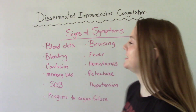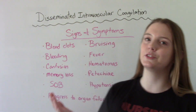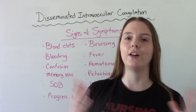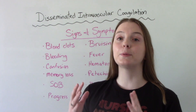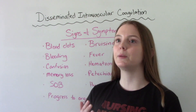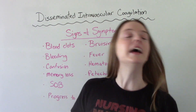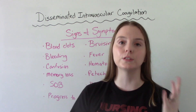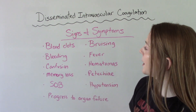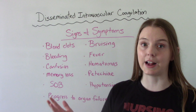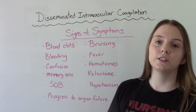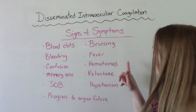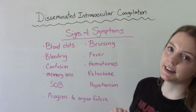Some signs and symptoms of DIC include, of course, blood clots and bleeding — both internal and external, from multiple locations. They could be bleeding from their gums, from their eyes, or from an IV site. They might be confused or have memory loss, have shortness of breath, be easily bruised, have a high fever, and could develop hematomas or petechiae.